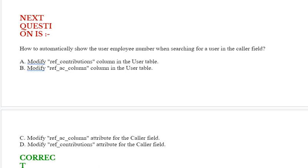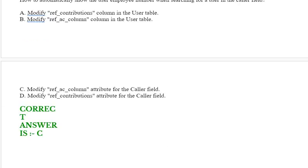Next question: How to automatically show the user employee number when searching for a user in the caller field? Option A: Modify ref_contributions column in the user table. Option B: Modify ref_ac_column in the user table. Option C: Modify ref_ac_column attribute for the caller field. Option D: Modify ref_contributions attribute for the caller field. Correct answer is Option C.